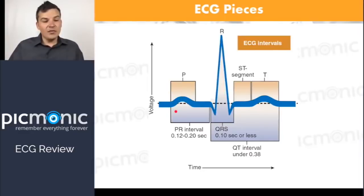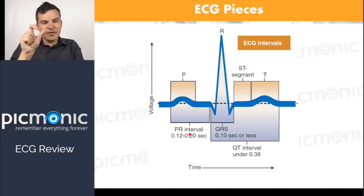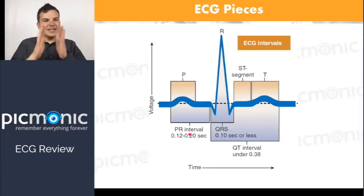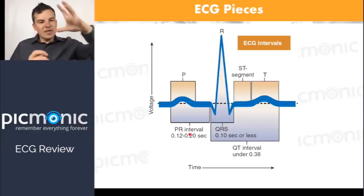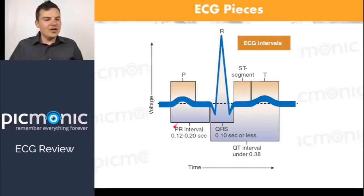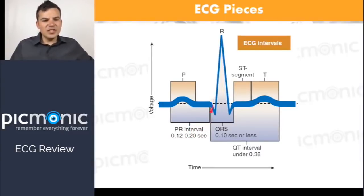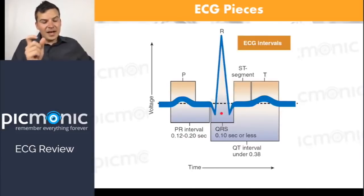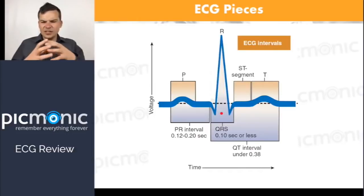Now the PR interval needs to be less than 0.2 seconds, which matches those five tiny blocks. That represents the delay in conduction speed from the atria going down to the ventricles — from the SA node to the AV node. If this is delayed — greater than 0.2 seconds — that's called a heart block. There are lots of different types of heart blocks, but the number one sign is a delayed PR interval greater than 0.2 seconds.